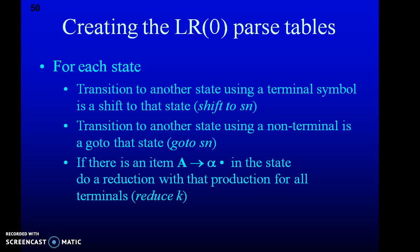To create the LR(0) parsing table, for each state we consider transitions to other states. A transition using a terminal symbol is called a shift; a transition using a non-terminal is called a goto. When the dot reaches the end of a production — written as A derives alpha-dot — it means we have completed reading and we need to perform a reduction.